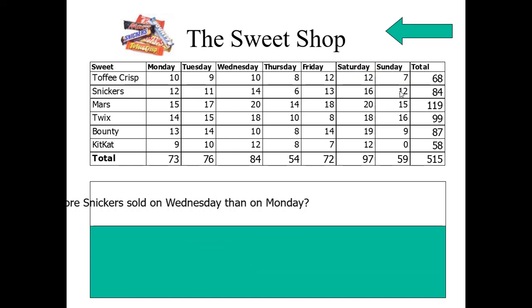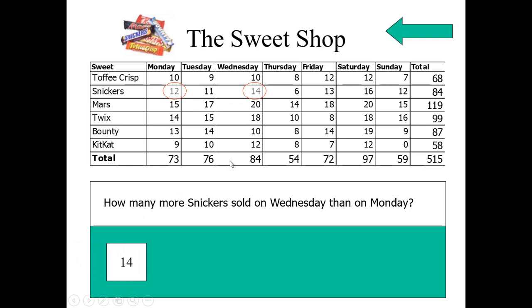Let us come to another question. How many more snickers sold on Wednesday than on Monday? So try to catch the snickers here. And Wednesday, here it is. And Monday, here it is. So what we have to do here? Should we add these two or subtract? Let us see. On Wednesday, snickers sold here, 14. On Monday, 12. How many more here? We should subtract 14 minus 12. We get 2. In this way, let us answer based on the question.